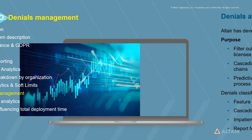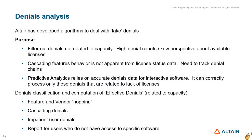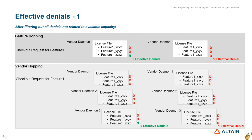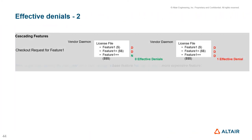Tracking denials correctly is very important for interactive software. The challenge is to account for only those denials that are related to license availability. Tracking these denials accurately is a requirement for correct functioning of the predictive analytics module. Altair SAO employs sophisticated denial chains to filter out denials resulting from feature and vendor hopping. The behavior of software packages of increasing functionality and cost cannot be analyzed without analyzing denial chains.